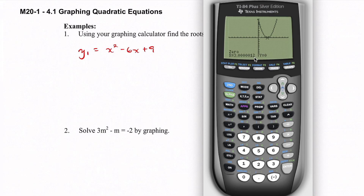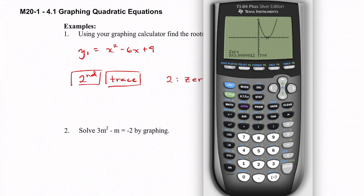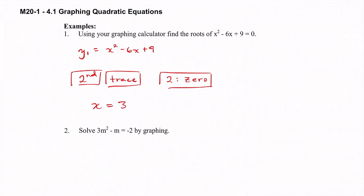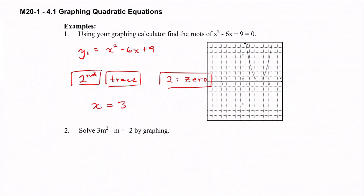Let's write down our answer and the steps. We clicked second and then trace, then chose option number 2 called 'zero' — it finds a height of zero, i.e., the x-intercept. If the calculator gives something like 2.99999, the answer is still 3. So our answer is x equals 3. A picture of what we had in the calculator shows the parabola touching the x-axis at exactly one point.